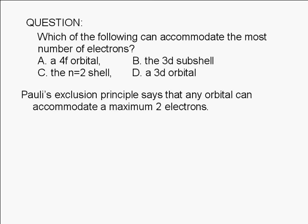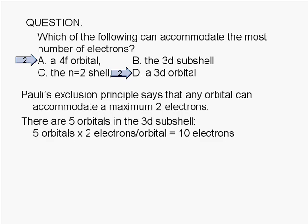According to Pauli's exclusion principle, no more than two electrons can be assigned to an orbital. Therefore, a 4f orbital can accommodate up to two electrons, and a 3d orbital can accommodate up to two electrons. Any d subshell consists of five orbitals, so a 3d subshell can accommodate a maximum of ten electrons. Five orbitals times two electrons per orbital equals ten electrons.